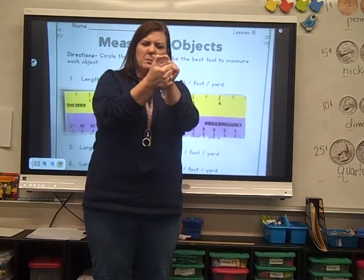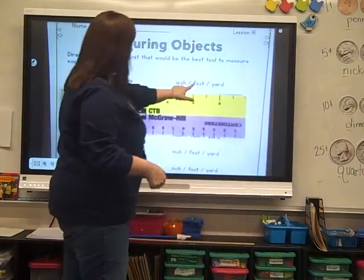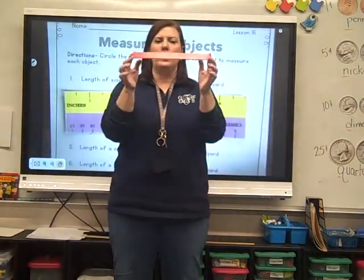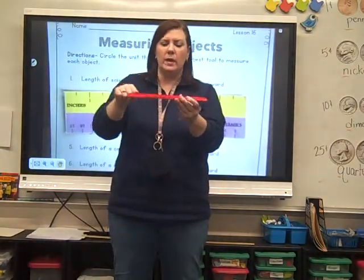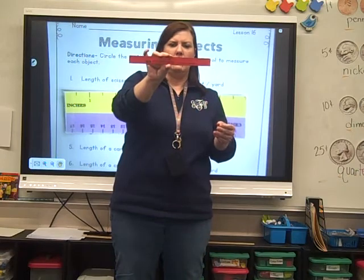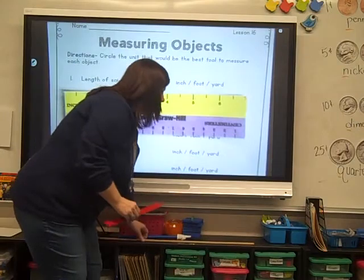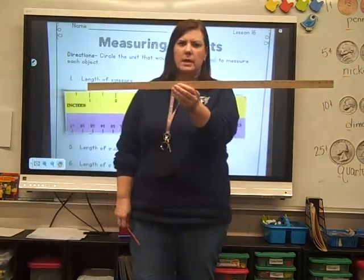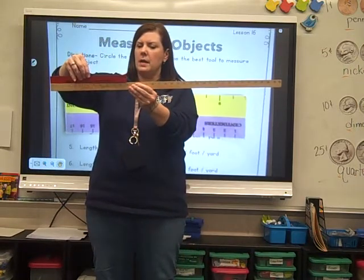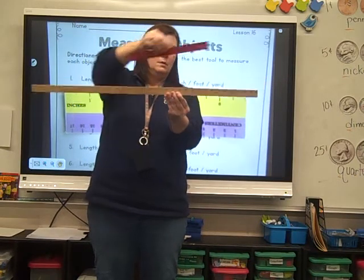If you're going to measure something in inches, it's going to be this small — that's one inch. Your next choice is a foot. A big ruler like this is one foot long; it has 12 inches on it. And your last choice is a yard. This is a yardstick — it has three feet in it.